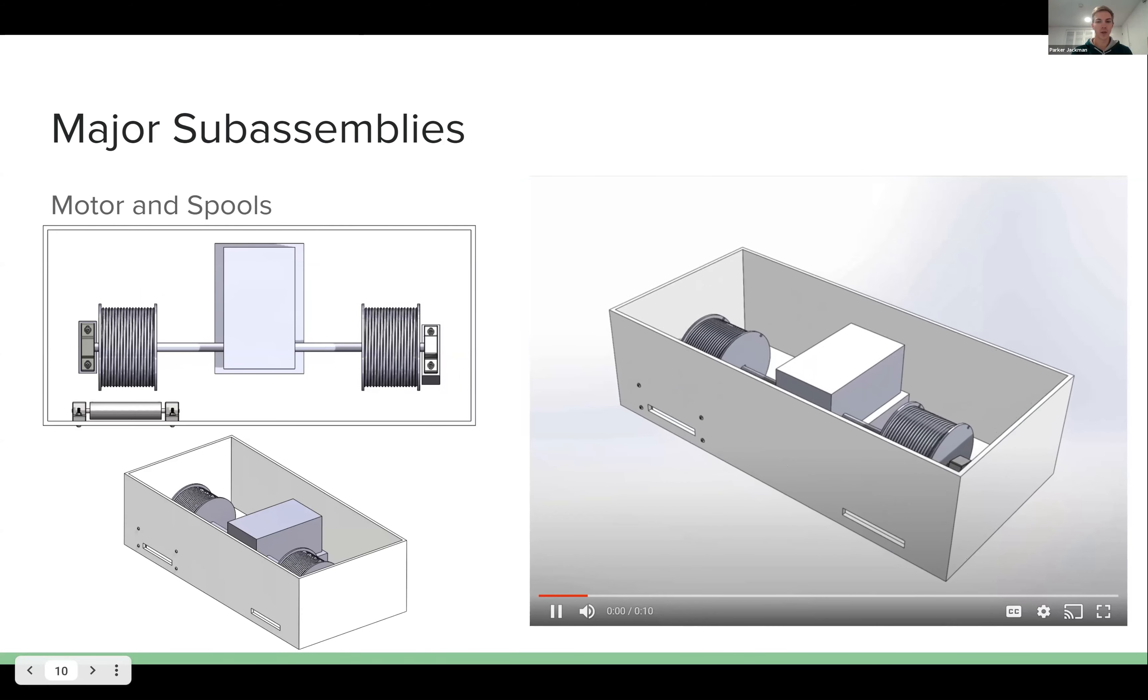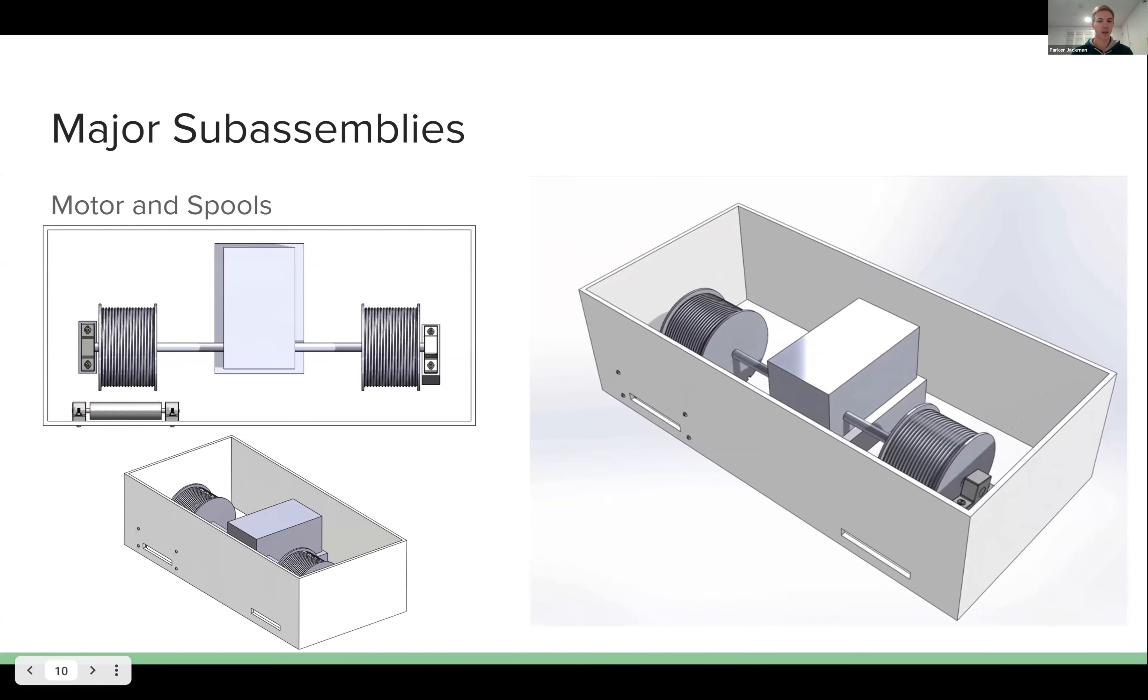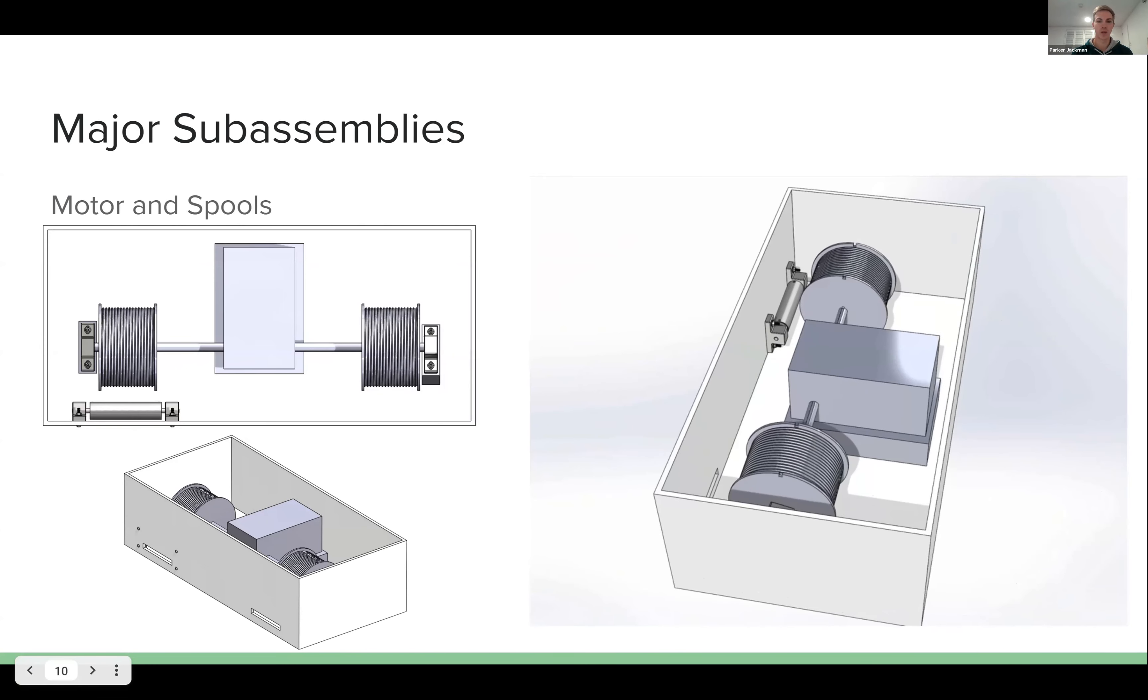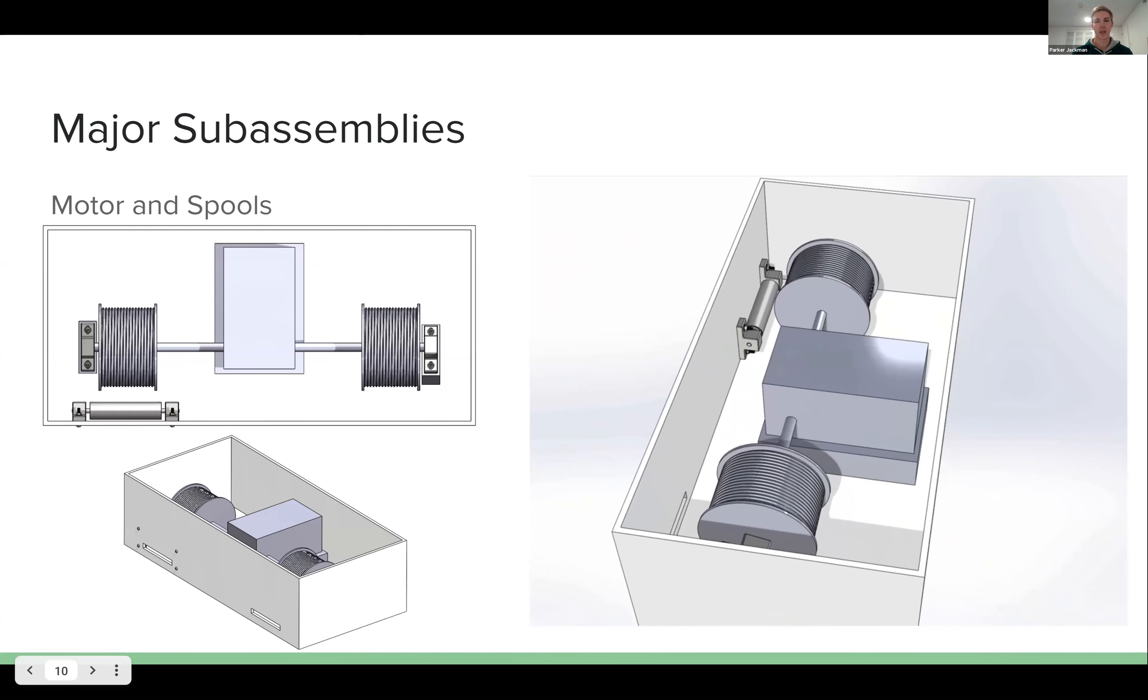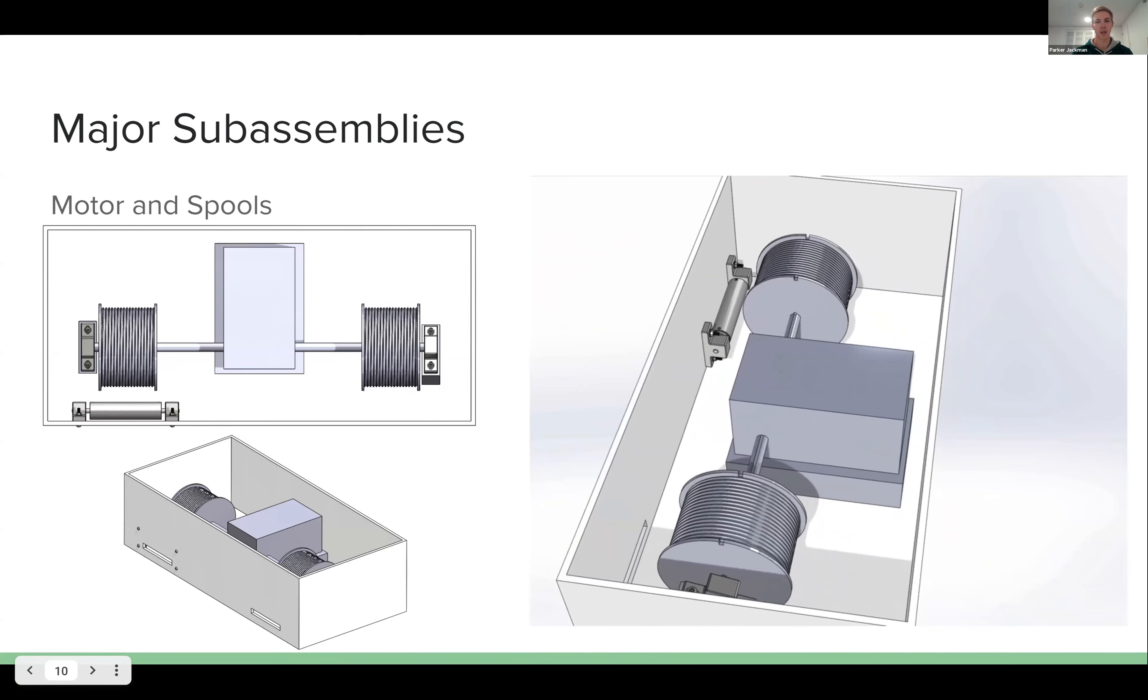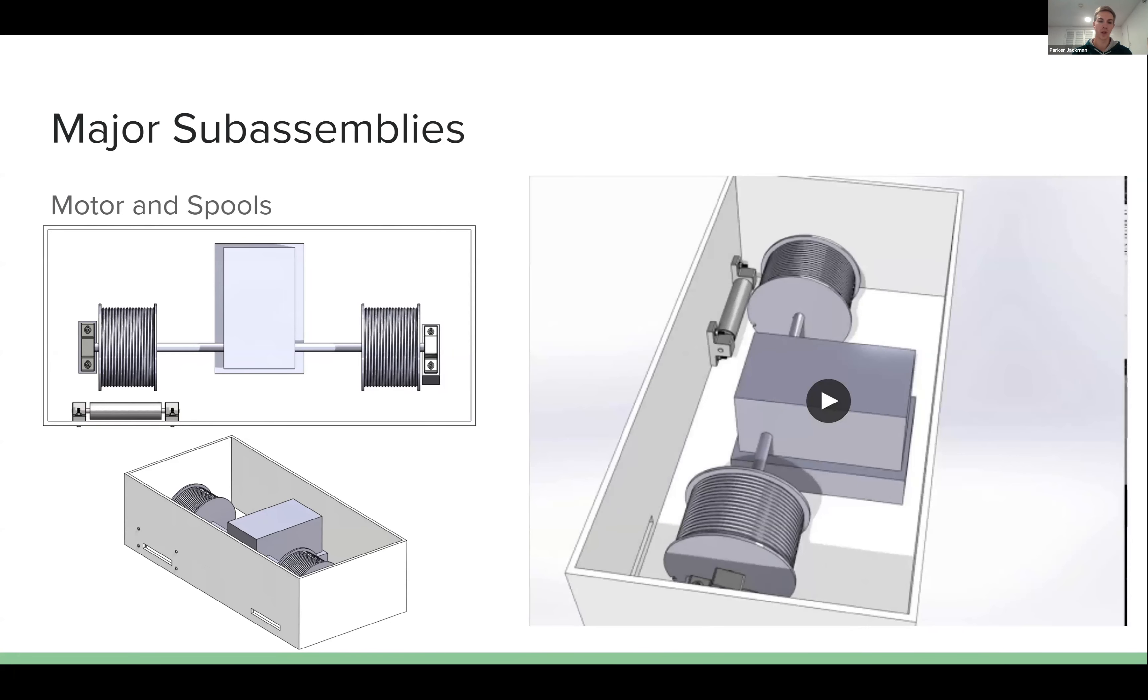The long range radio modules power the motor which spins two garage door spools in either direction, and either way one of them will pull cable in and the other will let cable out to pull the platform across the road either way.